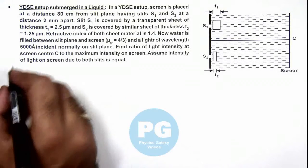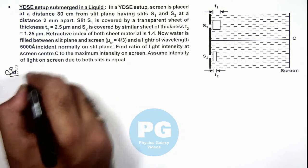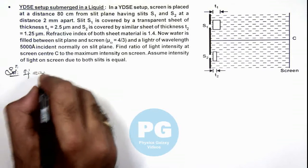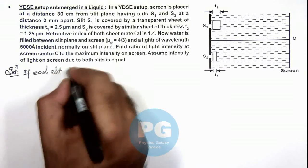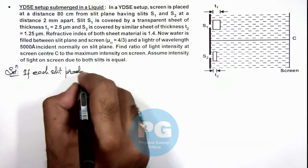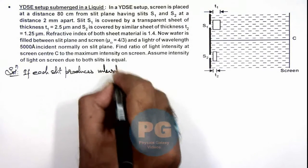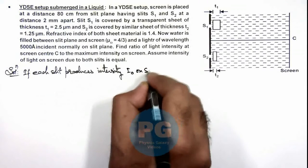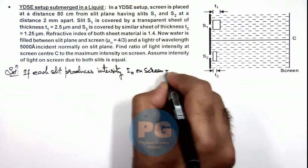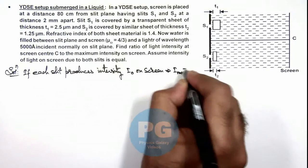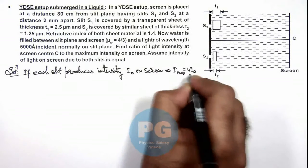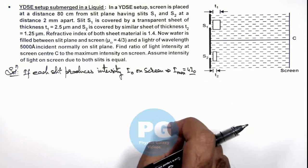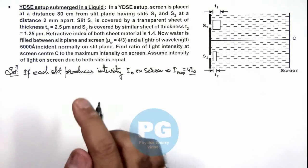So first thing here, we can simply write: if each slit produces intensity I₀ on screen, this implies the maximum value of intensity anywhere will be 4I₀ wherever light will have constructive interference. Now, we first need to calculate the intensity at C, so we first calculate the path difference.